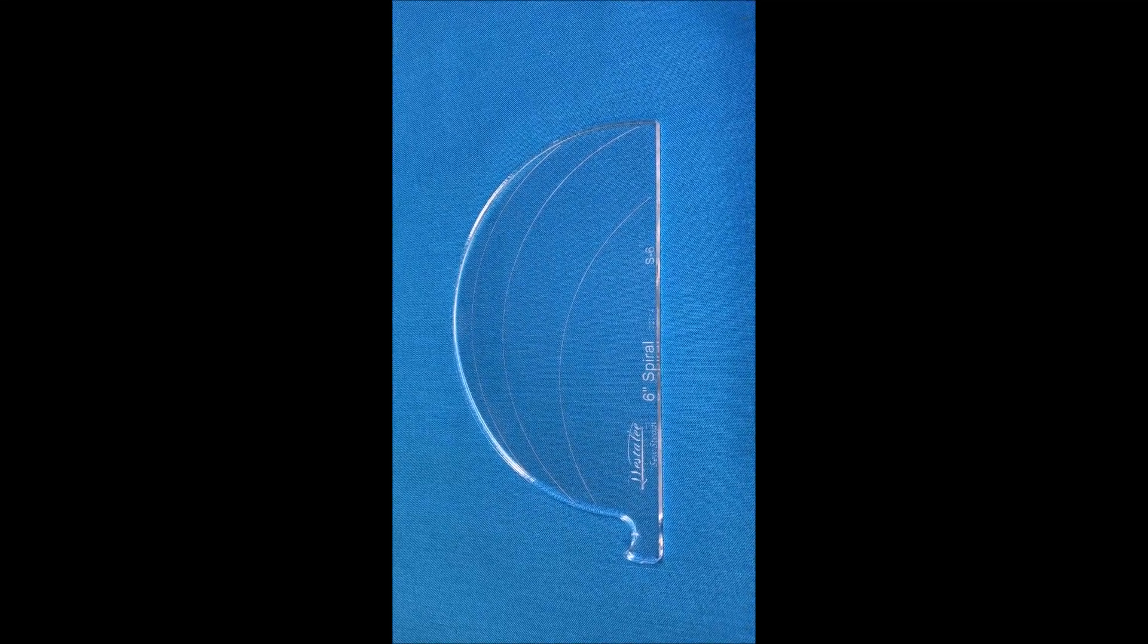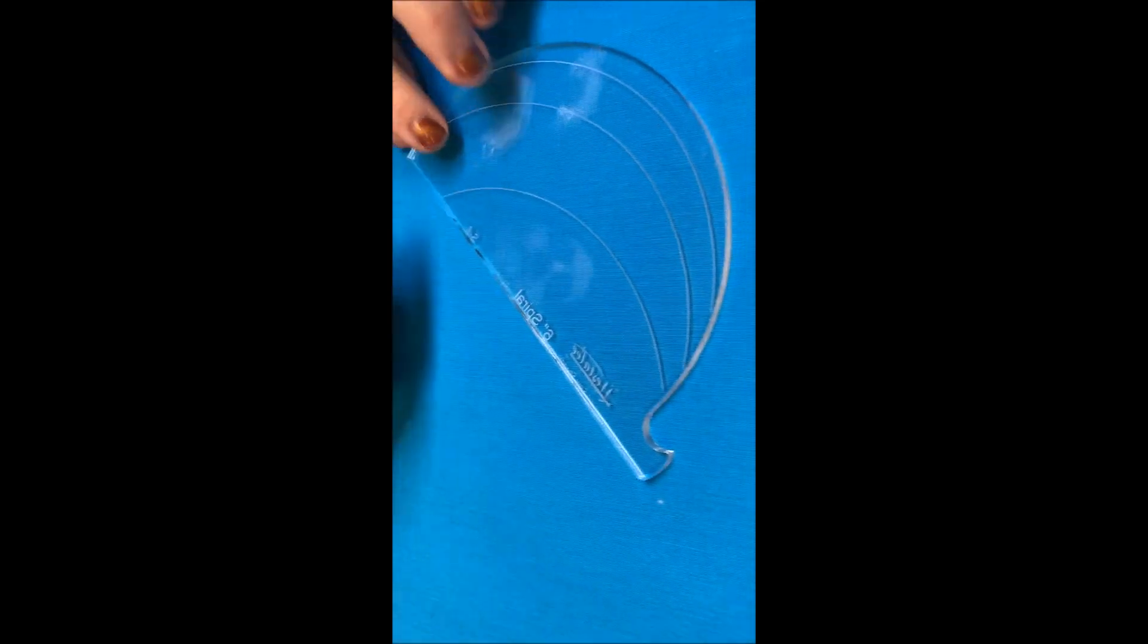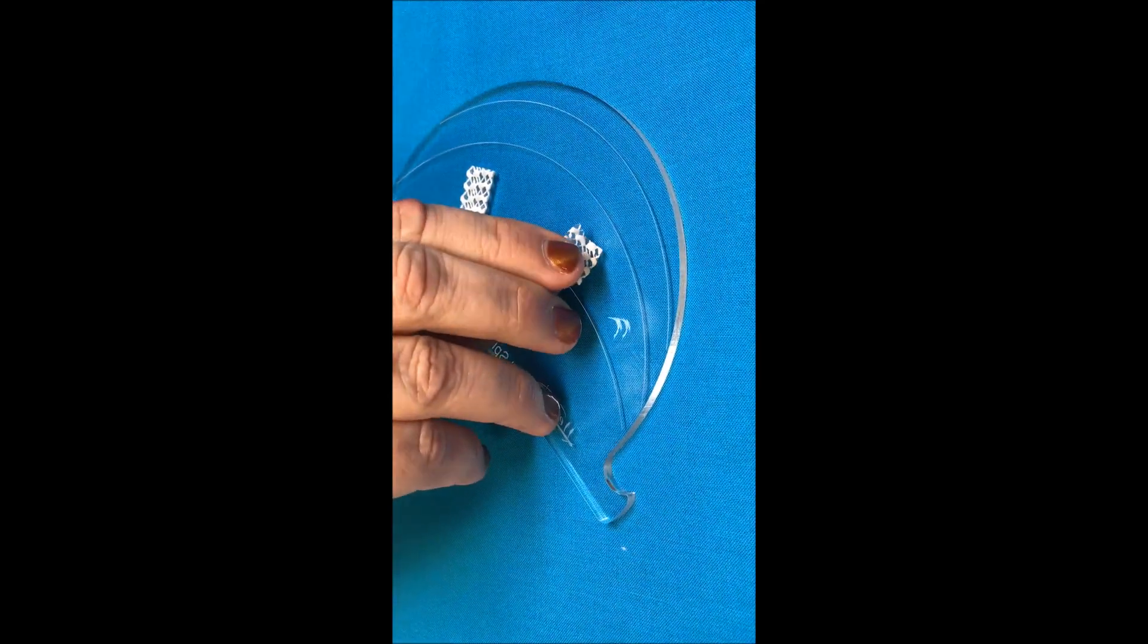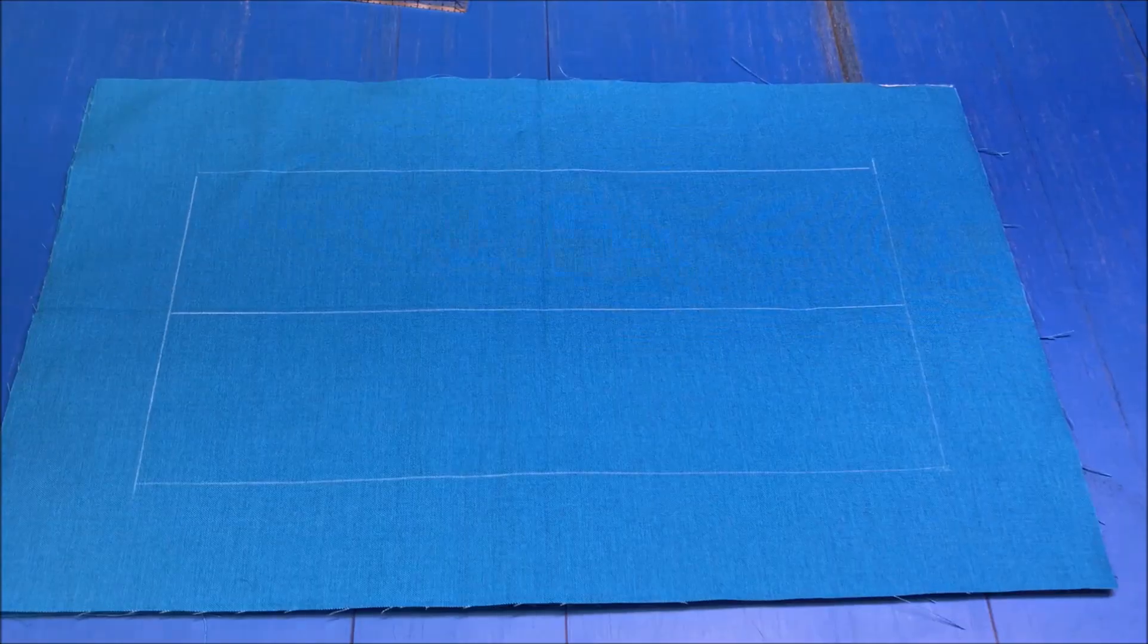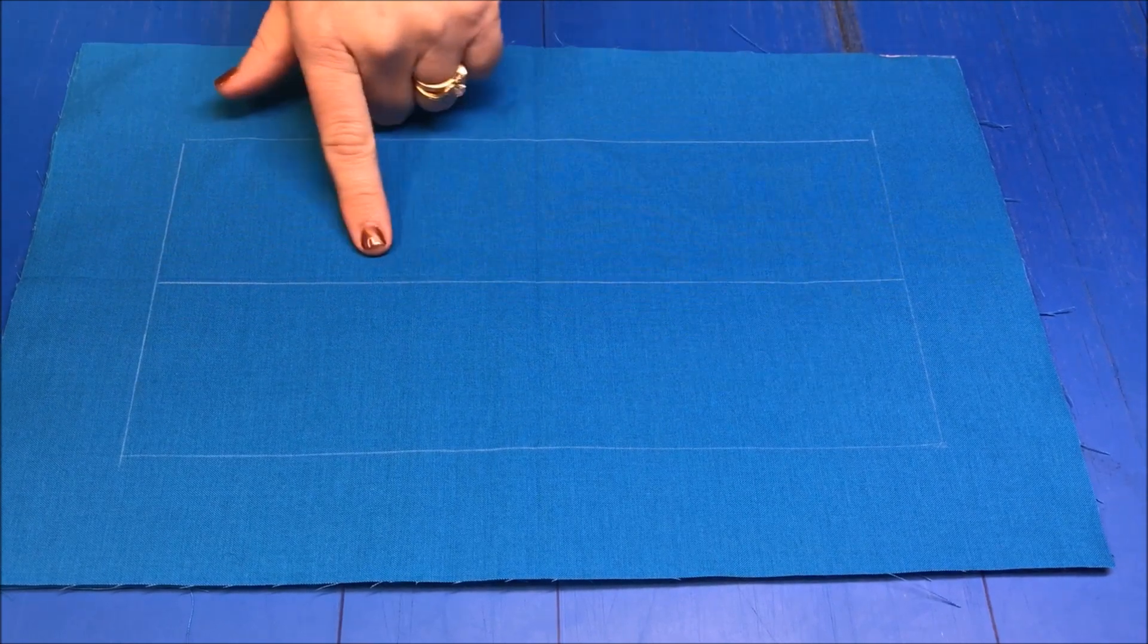Today I'm going to play with the 6 inch spiral. First I want to put a couple of pieces of stable tape on the back to prevent sliding. For this demo, I've marked a 6 by 12 rectangle and put a line right down the center.